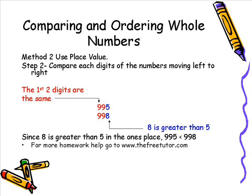But as we move from left to right we get to the ones place and we can see that there is an eight in one number and a five in the other and that the eight is greater than five in the ones place. So since 8 is greater than 5 in the ones place, 995 is less than 998.